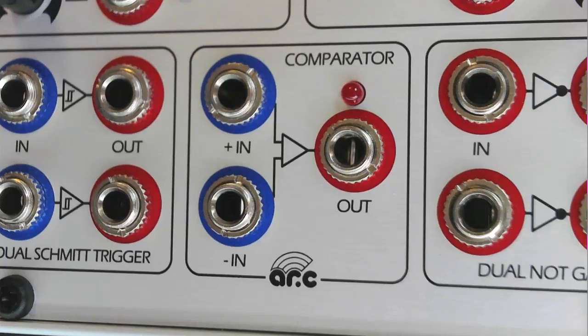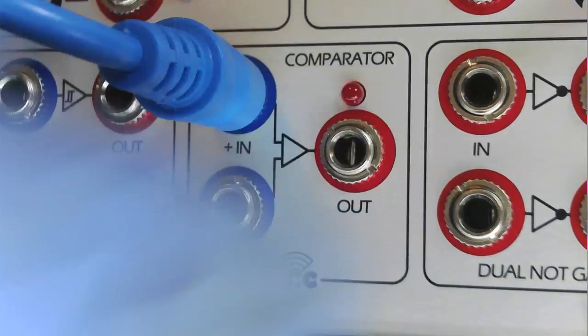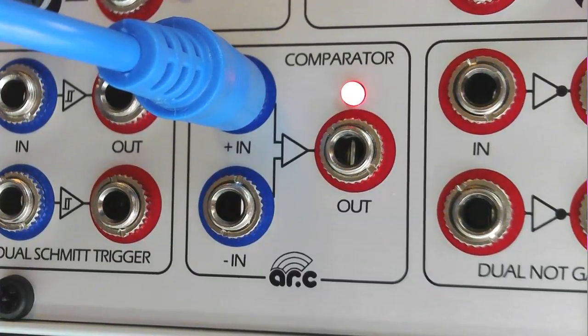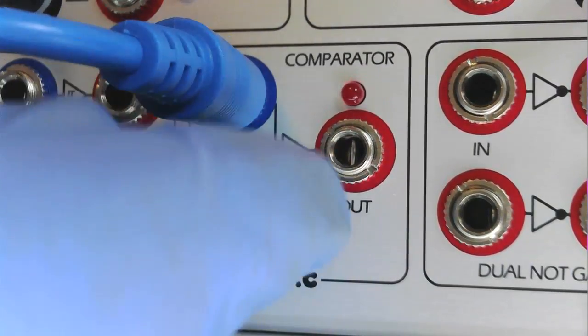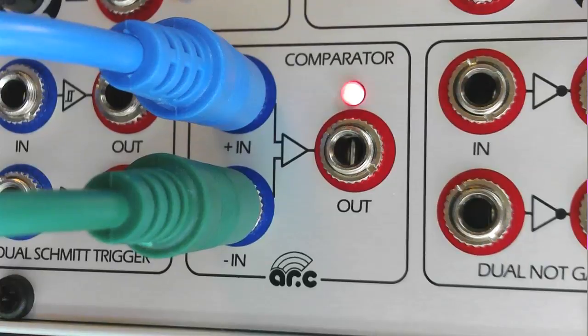The bottom input is normaled to plus 5 volts. Inserting an external signal will set the reference voltage of the comparator. The top input is compared against this reference voltage.